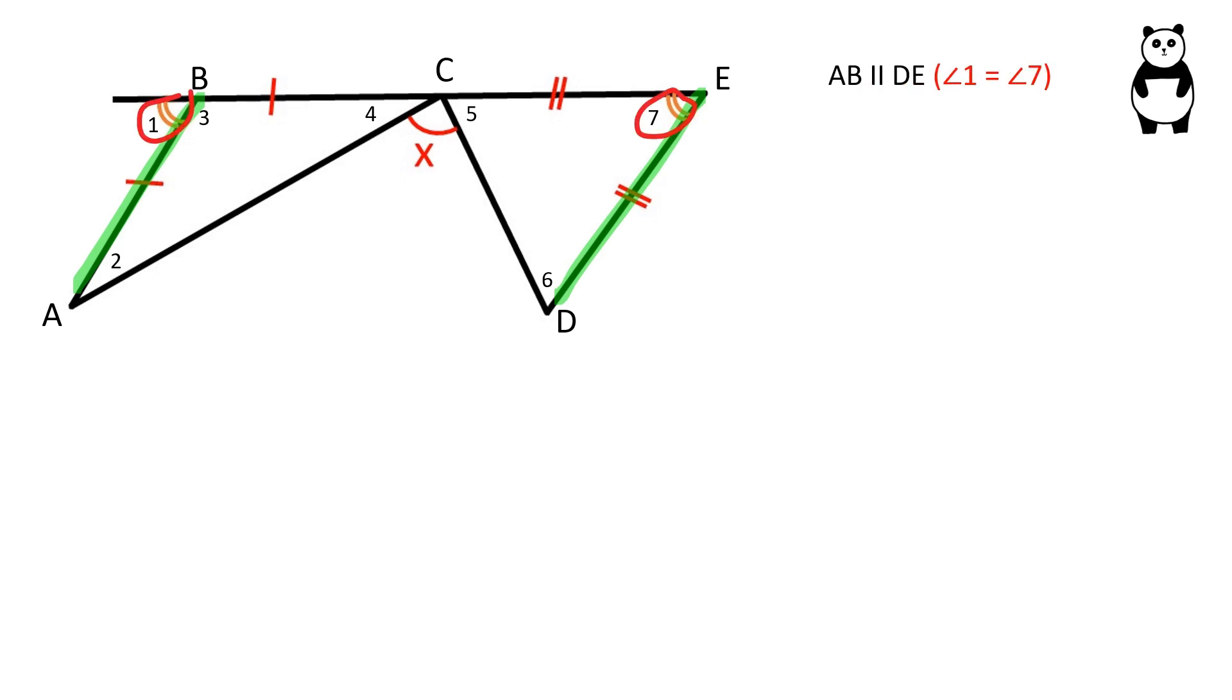Also, since AB is parallel to ED, angle 3 plus angle 7 is equal to 180 degrees. The sum of angles 2, 3, and 4 is equal to 180 degrees because the sum of the interior angles of a triangle is 180 degrees.